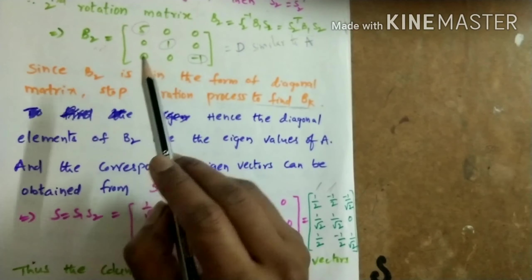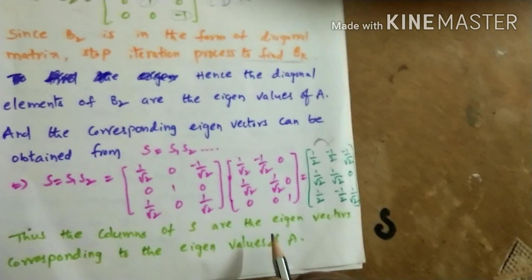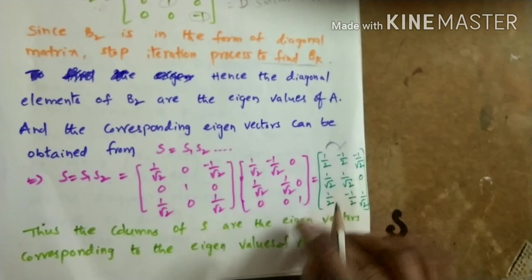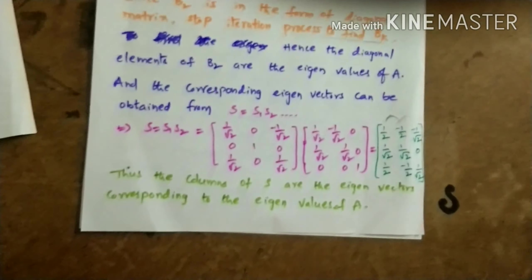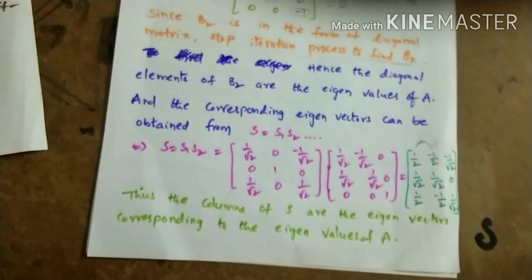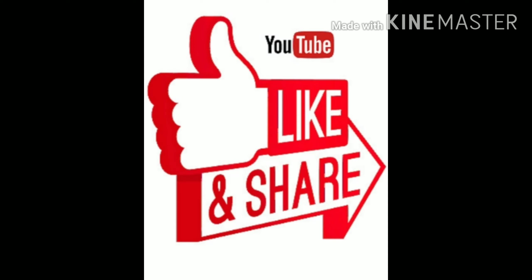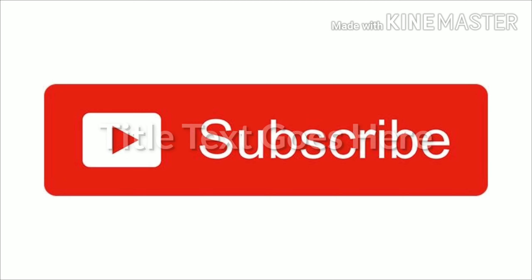We can observe that the eigenvalues of A are distinct and A is symmetric. By the property that eigenvectors corresponding to distinct eigenvalues of a symmetric matrix are always orthogonal, we can verify: each pair of eigenvector columns gives inner product 0, confirming they are pairwise orthogonal. This is the Jacobi method to find all eigenvalues and eigenvectors of a real symmetric matrix. Thank you.